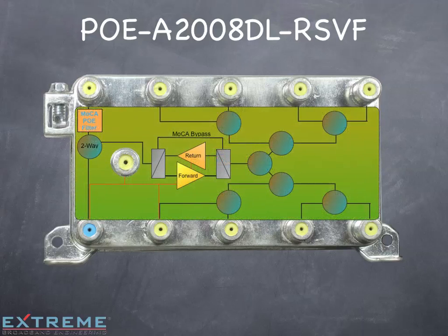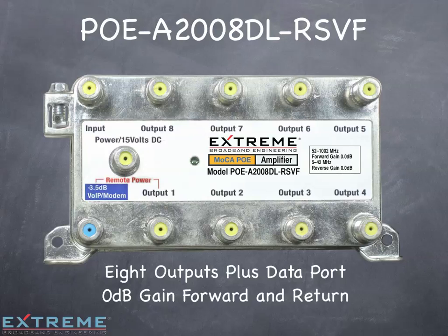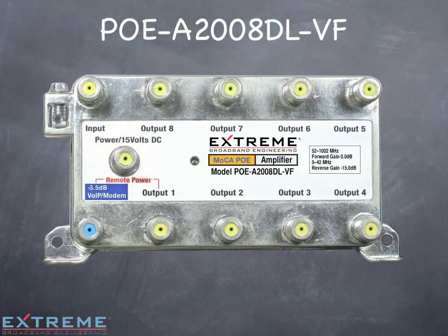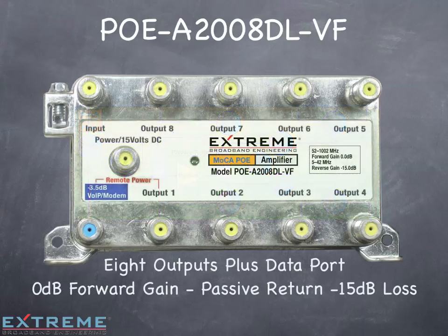The next PoE MOCA amplifier is an eight output data plus amplifier with a point of entry filter by the input port. It will allow the MOCA signal to communicate between all output ports and the data plus port, but will not allow the signal to exit the input port. The eight output passive return variant has 0 dB of gain in the forward and passive return with 15 dB of loss.